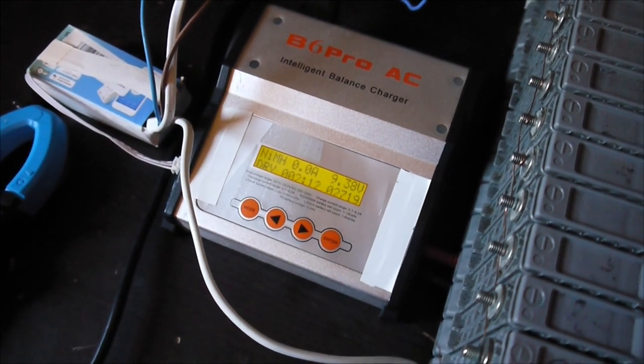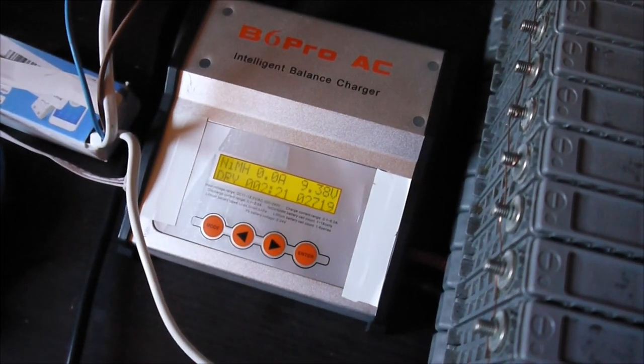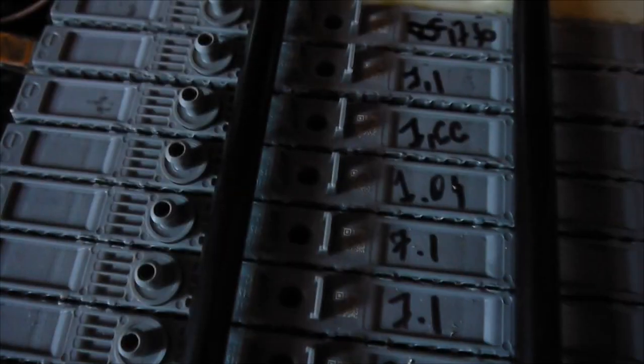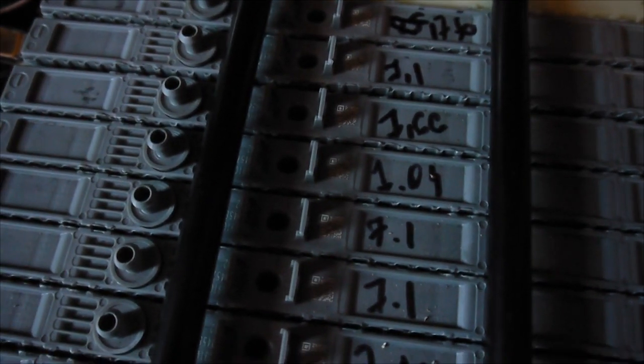Let's wait for the discharging cycle and I'll show you how the modified B6 Pro is acting. Here you can see the internal resistance before any cycling. Most of them are around 7.1 milliohms. This one at the end, they're pretty bad. Three of them I don't even bother to charge or check anymore.